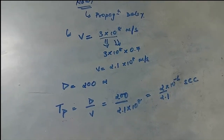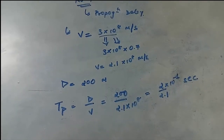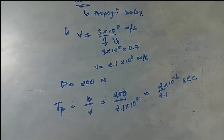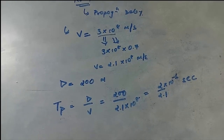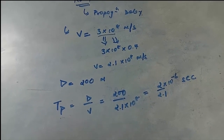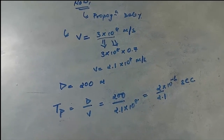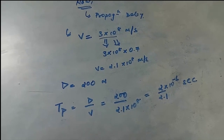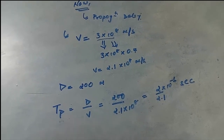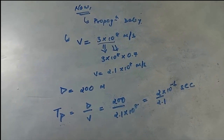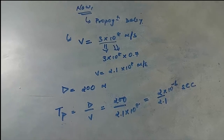We will not be discussing examples of queuing delay and processing delay because there is no mathematical formula for those. That was all the examples of delays in computer networks. Thanks for watching.